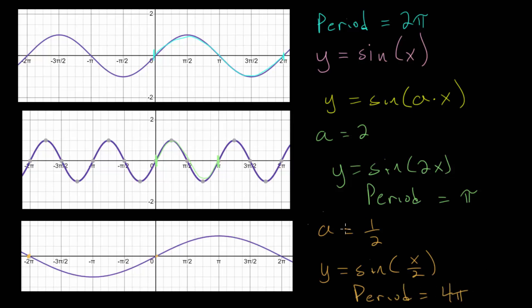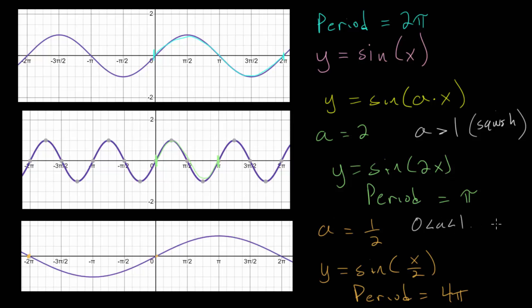We can notice a pattern: when the a value is greater than 1, the function is squished — it contracts closer to the y-axis. When a is a fraction between 0 and 1, the function is horizontally stretched, pulling away from the y-axis.